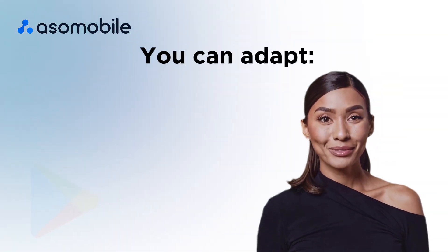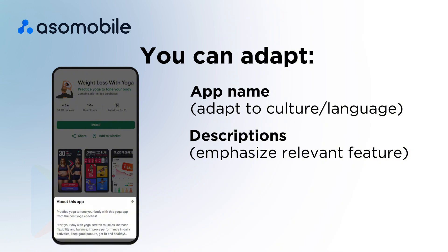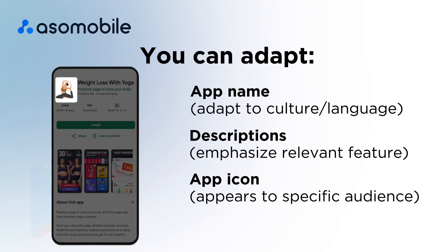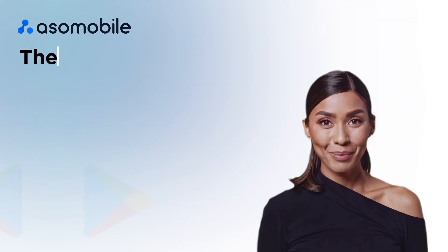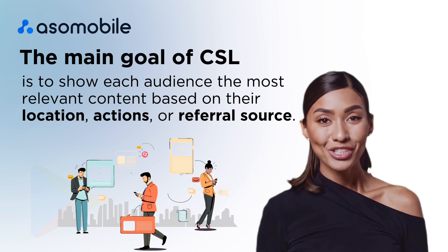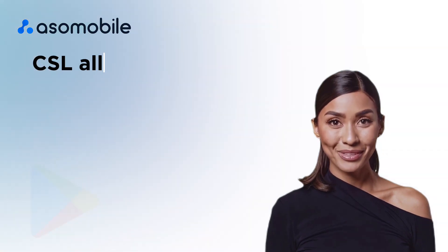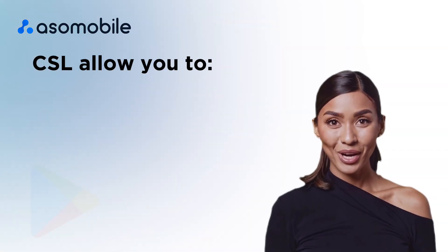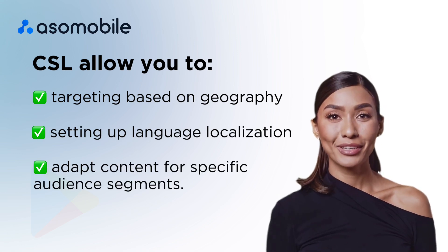This means that you can adapt the name of the app to the cultural characteristics or language of the target audience; tailor short and long descriptions to emphasize the features most interesting to a specific user segment; customize the app icon to use images that resonate with a specific audience; and create screenshots and videos that demonstrate functionality meeting the needs of different user groups. The main goal is to show each audience the most relevant content based on their location, actions, or referral source. This feature allows you to target based on geography, set up language localization, and adapt content for specific audience segments.